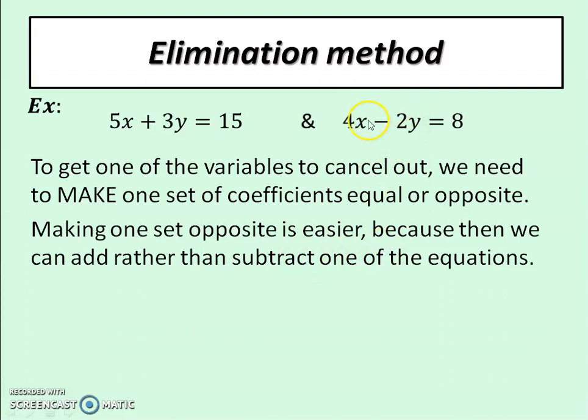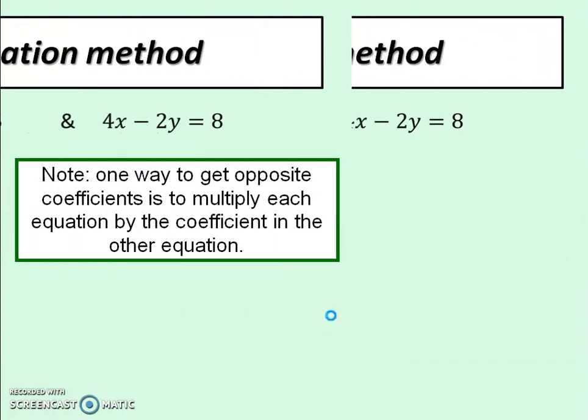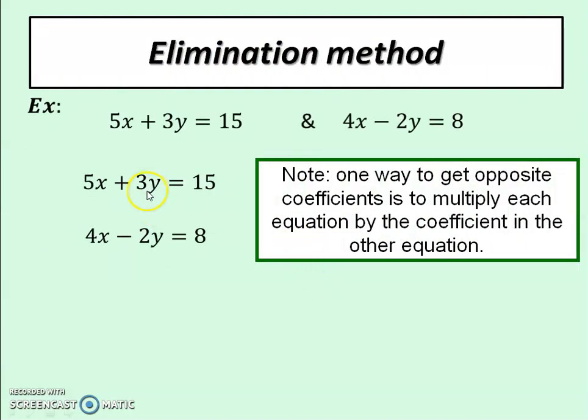Because one of these has a negative already, I would probably just try to multiply these by something to get these to be the same number. One way to do that is to multiply by the other one's coefficient. Like if I wanted to get rid of the y's, because there are 2 here and 3 here, if I multiply this equation by 2 and this one by 3, those would both give me the same number.